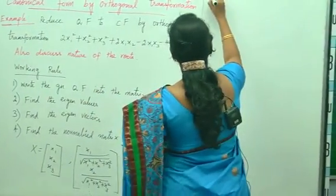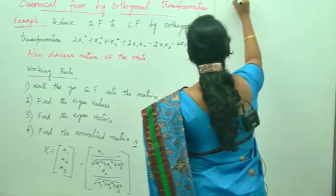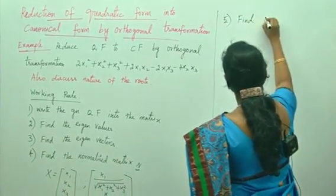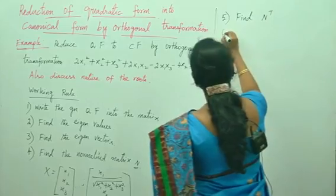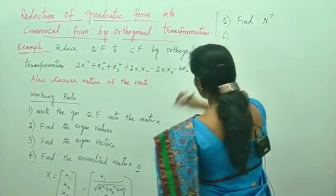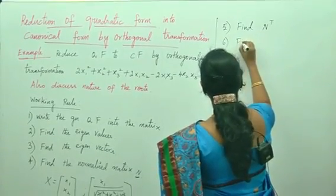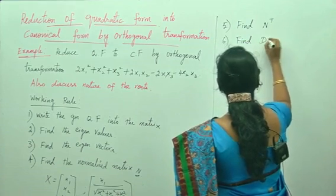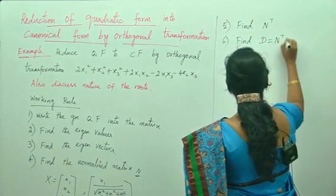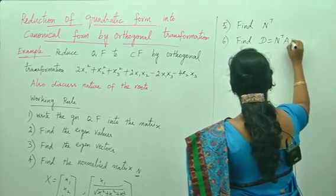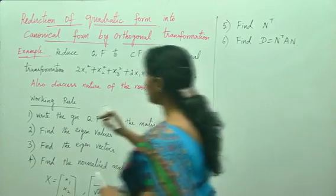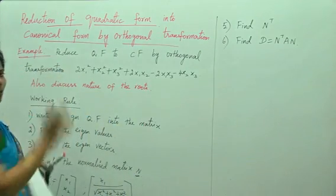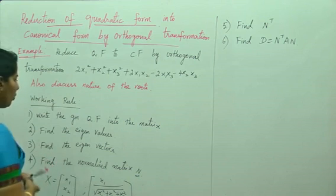Number 5: Find N-transpose, that is, interchange rows into columns. And the last step: find B equals N-transpose times A times N. This is the working rule for the reduction of quadratic form into canonical form.